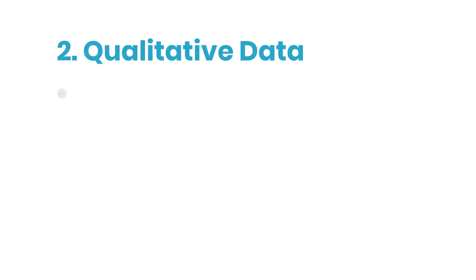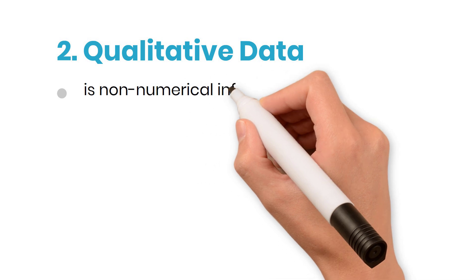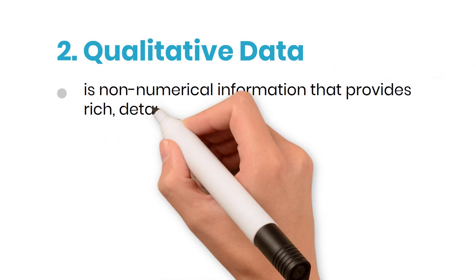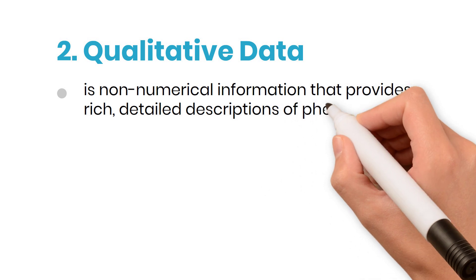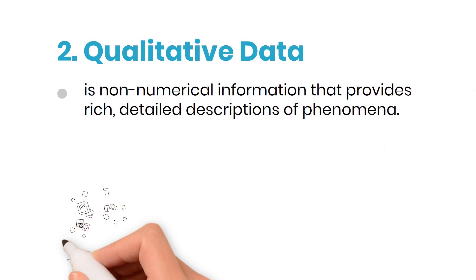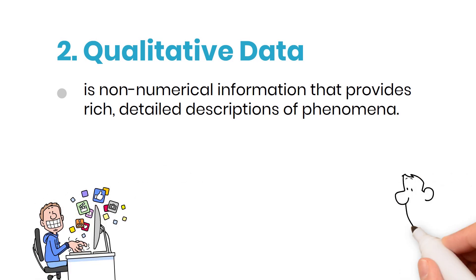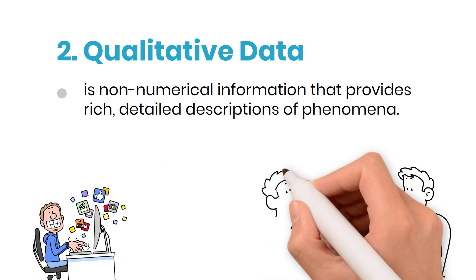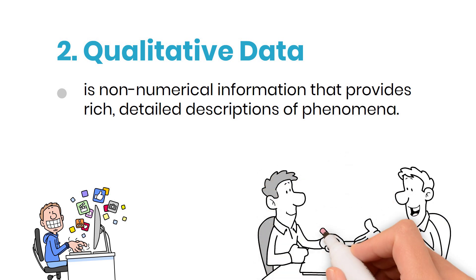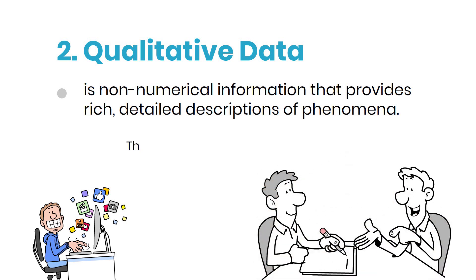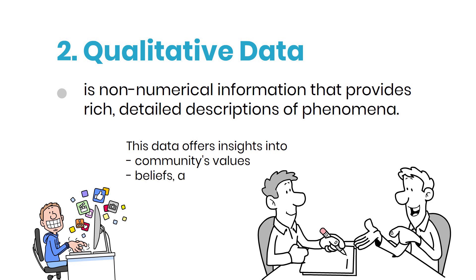Number two: qualitative data. It is non-numerical information that provides rich, detailed descriptions of phenomena. It helps researchers understand the context, meanings, and experiences associated with social issues. For example, an anthropologist studying cultural practices in a remote village might conduct in-depth interviews with residents, record observations of daily life, and collect personal narratives. This qualitative data provides information about communities' values, beliefs, and traditions that cannot be captured through numbers alone.